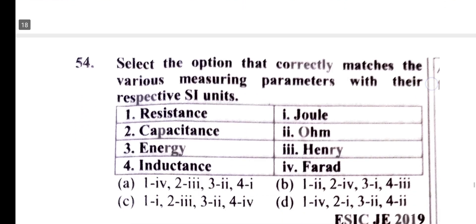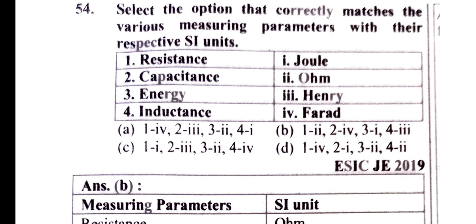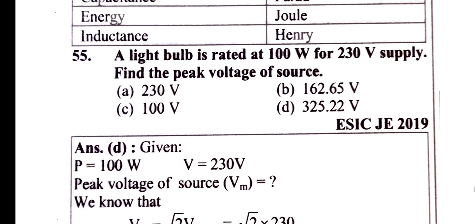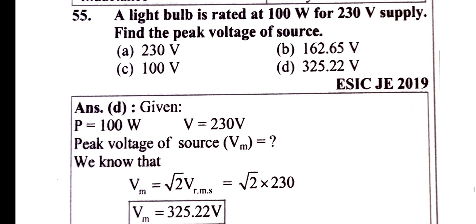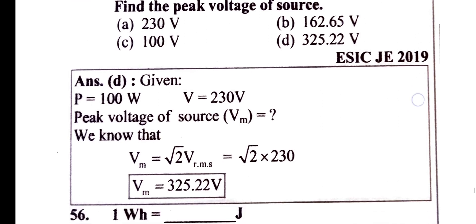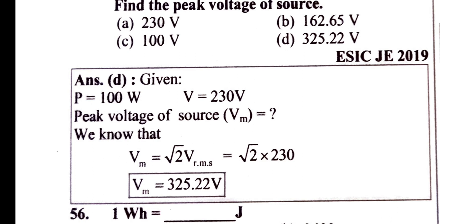Units question: 1 resistance — ohm, 2 capacitance — farad, 3 joules, 4 inductance — henry. This light bulb is rated at 100 W for 230 V supply — find the peak voltage. Formula: Vm equals √2 × Vrms, so peak voltage equals √2 × 230 V.